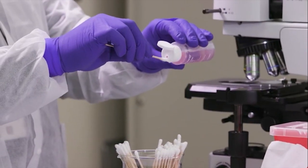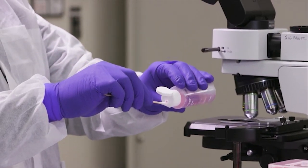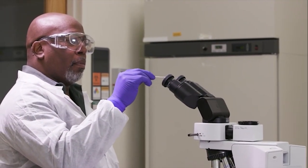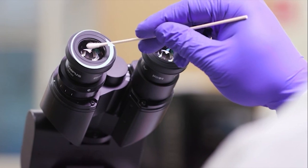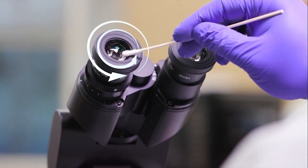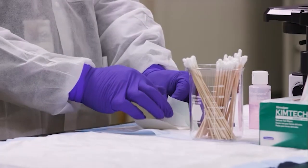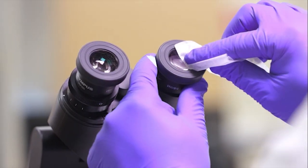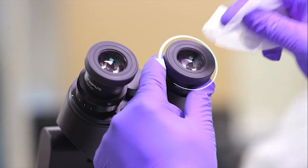Clean the oculars by moistening the tip of a cotton swab or lens paper with lens cleaning solution. Working from the inside to the outside, gently clean each eyepiece in a circular motion. With a clean piece of lens paper, use a circular motion to polish and remove any cotton fibers.